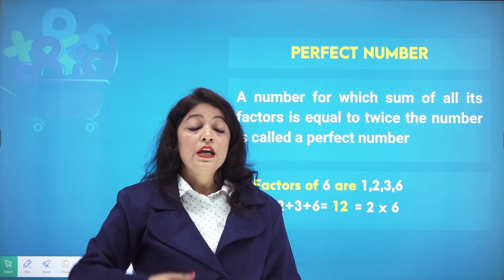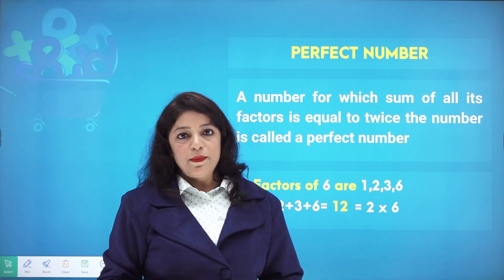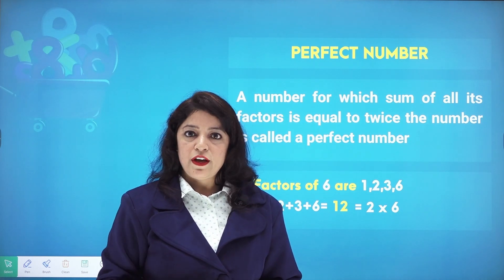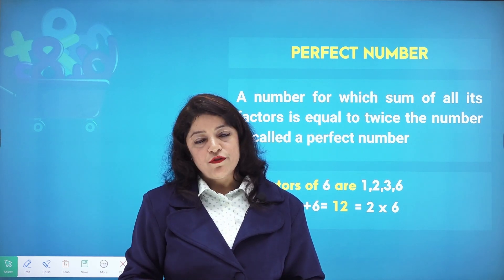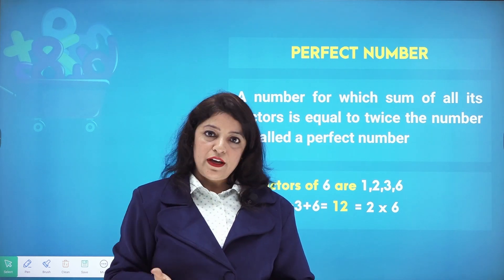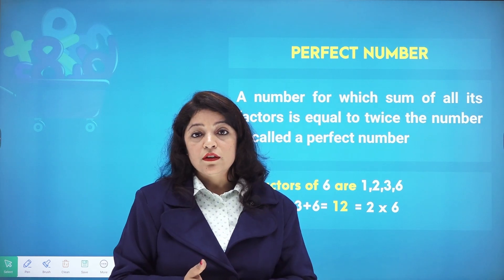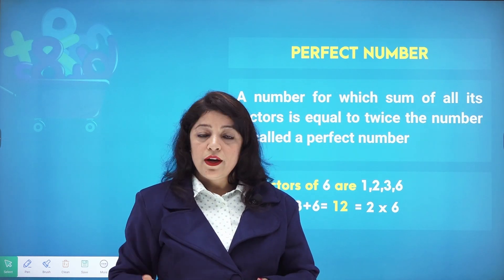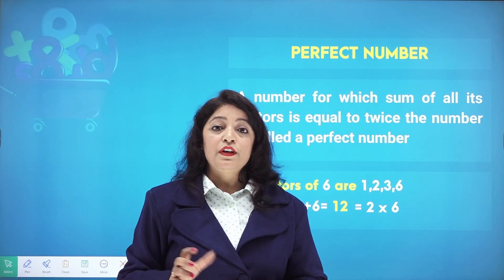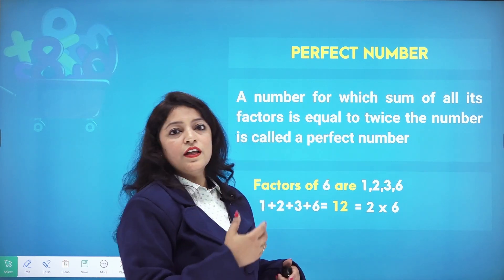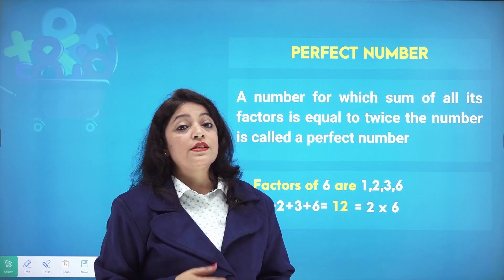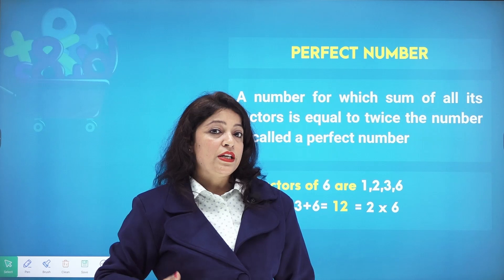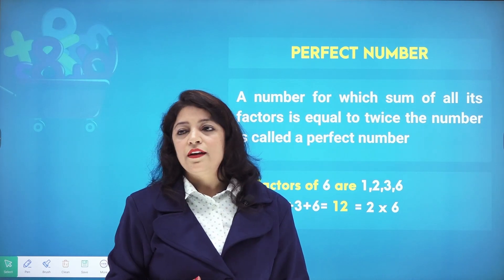Not all numbers are perfect numbers — only a few. For example, take 5. The factors of 5 are 1 and 5. Adding them: 1 plus 5 equals 6. But twice of 5 is 10, and 6 does not equal 10, so 5 is not a perfect number.